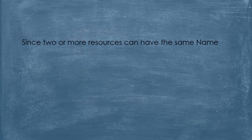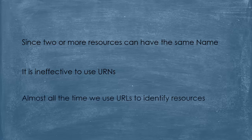Since two or more resources can have the same name, it is ineffective to use URNs to identify and locate resources. Thus almost all the time we use URLs to do that. And because we use URLs most of the time, let's talk about them in a little more detail.